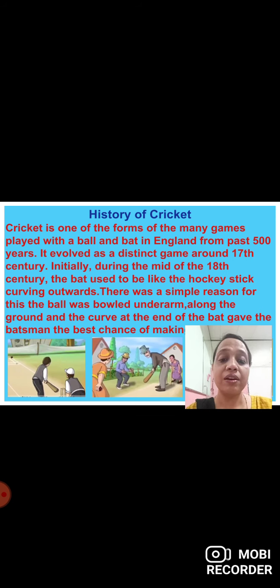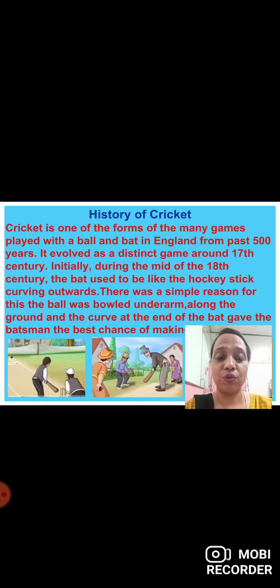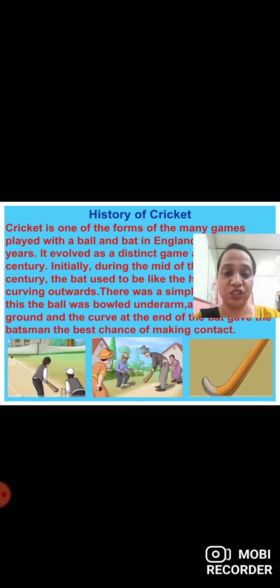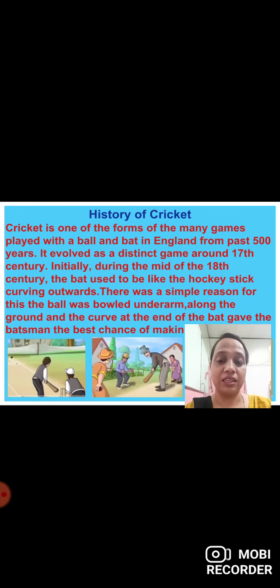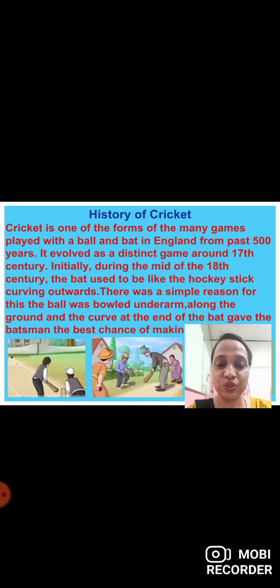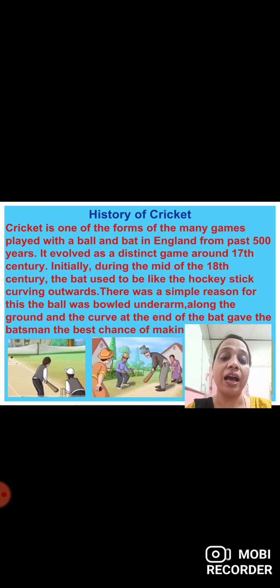Initially, during the mid of the 18th century, the bat used to be like a hockey stick curving outwards — you can see this in the picture. The bat was curved outward like a hockey stick. There was a simple reason for this: the ball was bowled underarm along the ground, and the curve at the end of the bat gave the batsman the best chance for making contact, making it very easy to score.